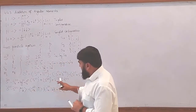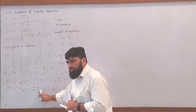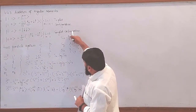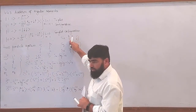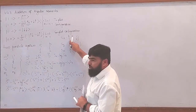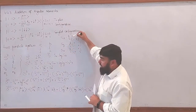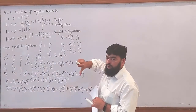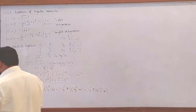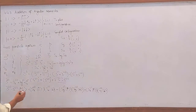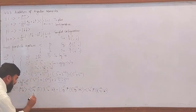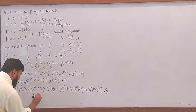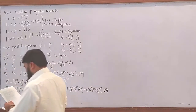Now let's see when Sx operates on this spin-half particle, what it will give. The very first thing it will give is h-bar over 2. What this operator is doing: it is 0-by-0 and 1-by-1, so it will make spin-up become spin-down. It will give h-bar over 2 and it will flip spin-up to spin-down.